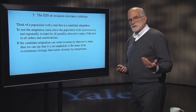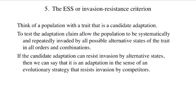The fifth criterion is more theoretical, coming out of game theory: the ESS, or Evolutionarily Stable Strategy, also called the Invasion Resistance Criterion. This is a way of testing — usually done in a mathematical or computer simulation model, though it can be done experimentally — where you have a candidate trait for adaptation and you allow the population to be systematically and repeatedly invaded by all possible alternative states of the trait, bombarding it with anything that might out-compete it. If your candidate adaptation can resist invasion by alternative states, then we say it is an adaptation in the sense that it is a strategy that resists invasion. This is a very strong logical criterion.